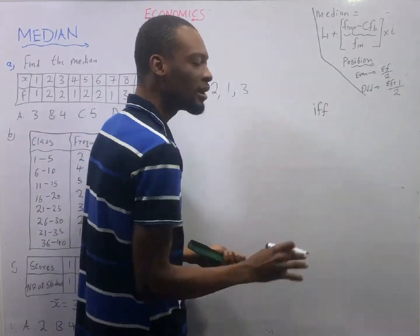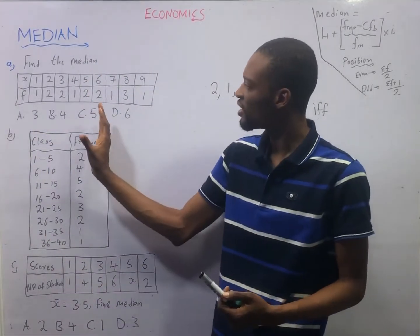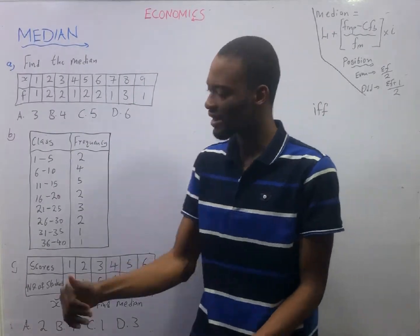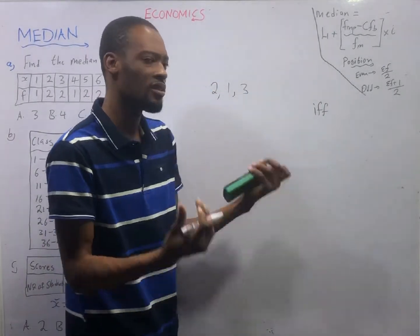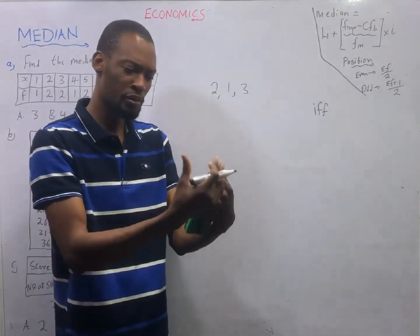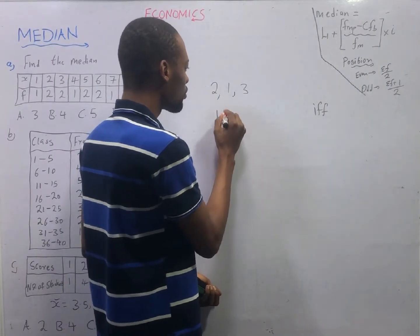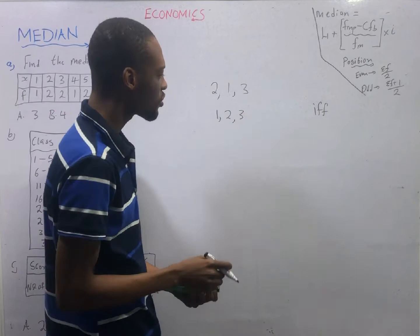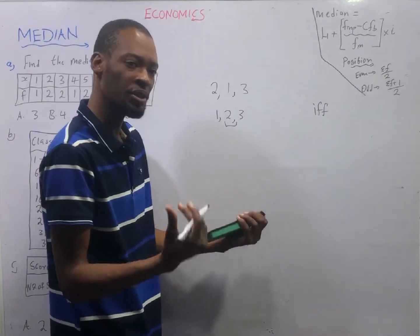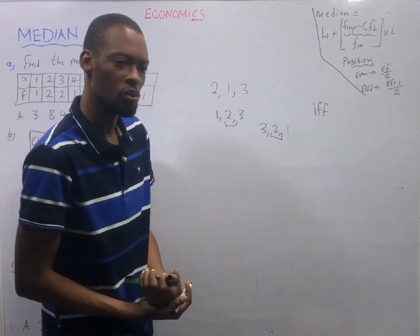For ungrouped data, if I give you values randomly, they are referred to as ungrouped data. By the time the values are in a table and they have frequency, they are referred to as grouped data or frequency distribution. If you arrange in ascending order from smallest to biggest - one, one, two, two, three - the median is two. If already in descending order it will be three, two, one, and the median is also two.